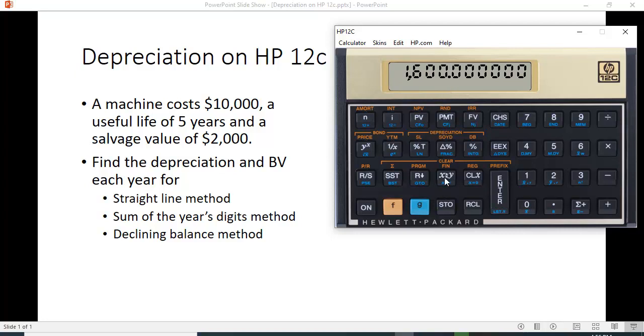If you hit this swap XY key, you can see that the book value is $6,400. If we do year two, same thing, function SL, it's the same $1,600 depreciation.